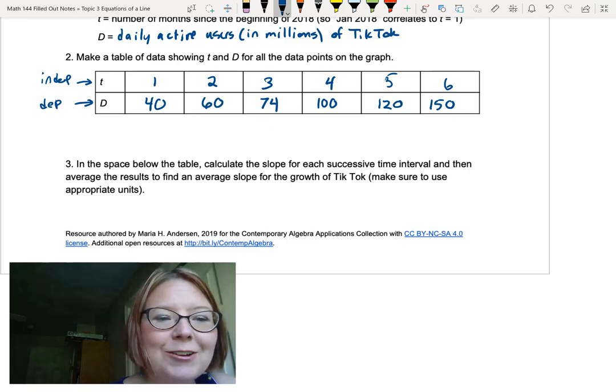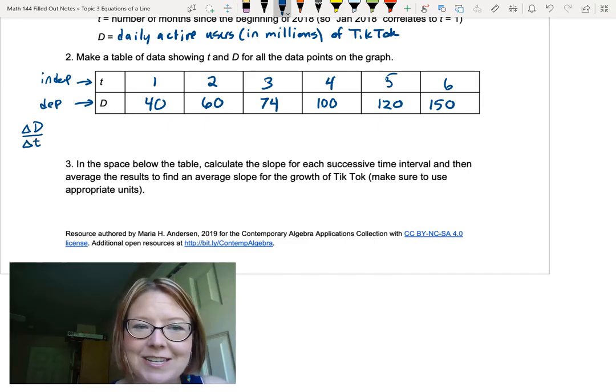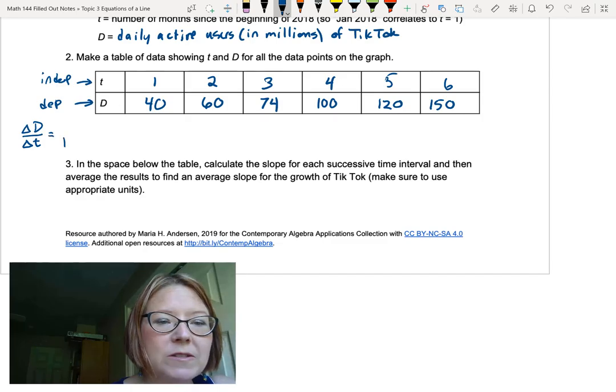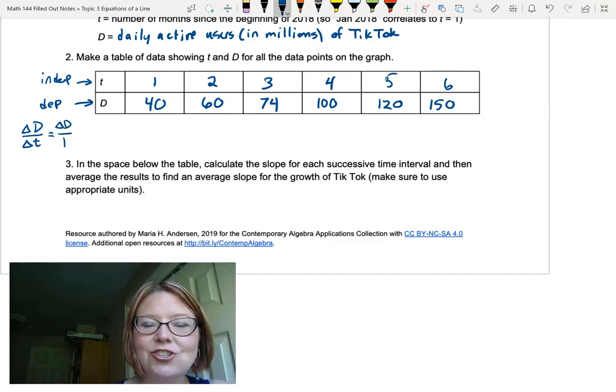So when we want to calculate the slope, we're going to do the change in d, delta d, over the change in time or delta t. For any change in time we have here, whether it's two minus one or three minus two or four minus three, the change in time is always going to be one. So really all we need to do is calculate the change in the d values to know what our slope is.